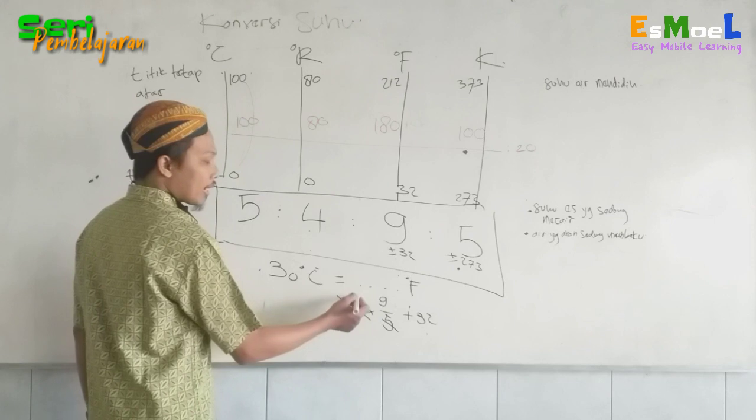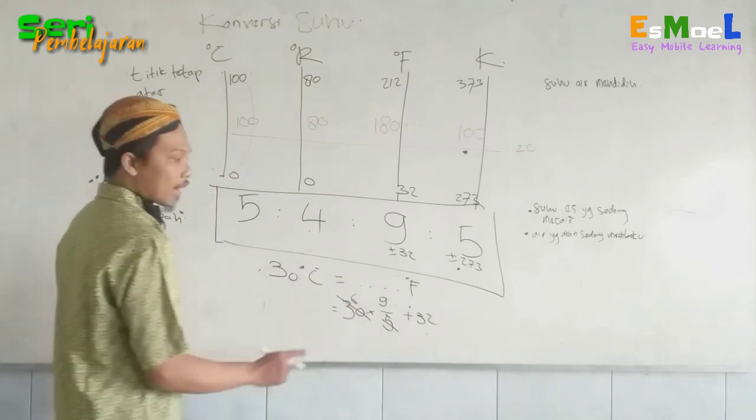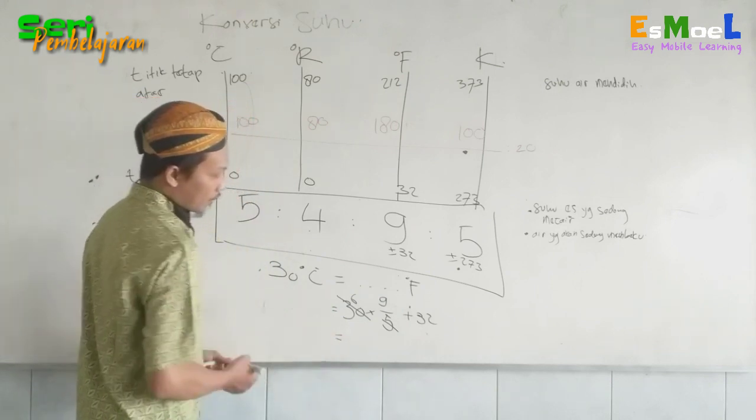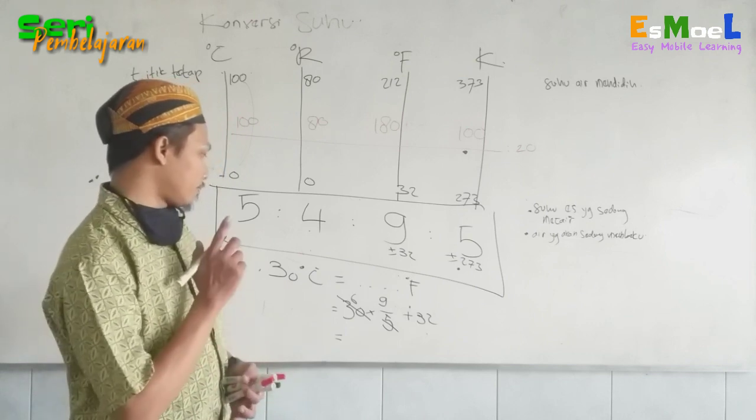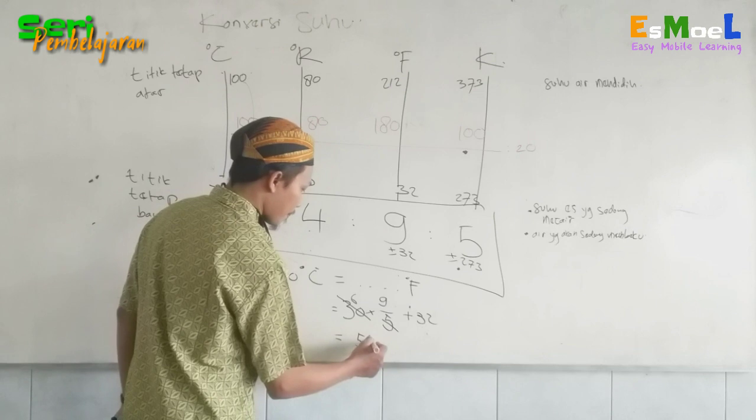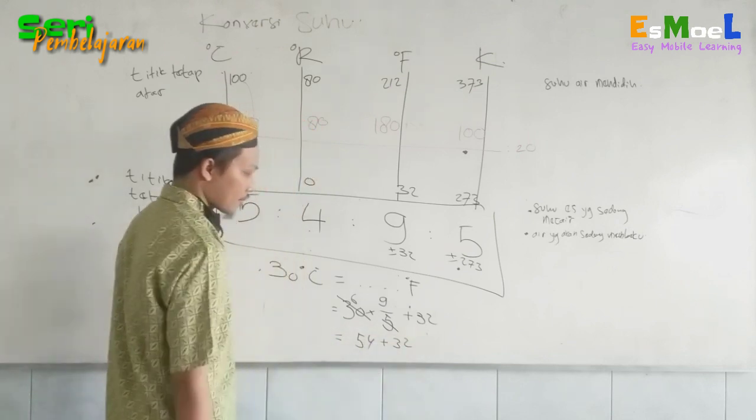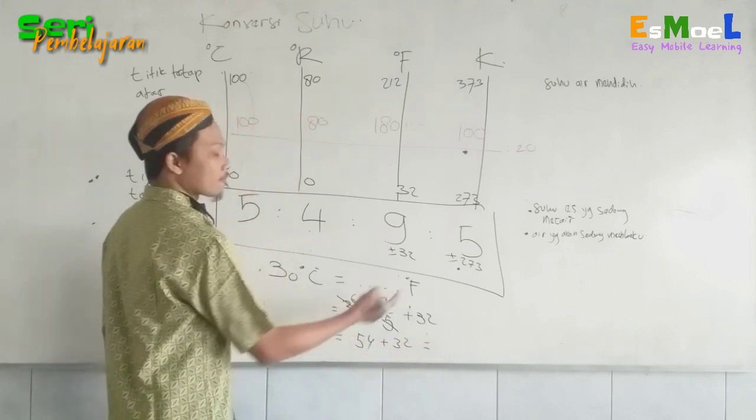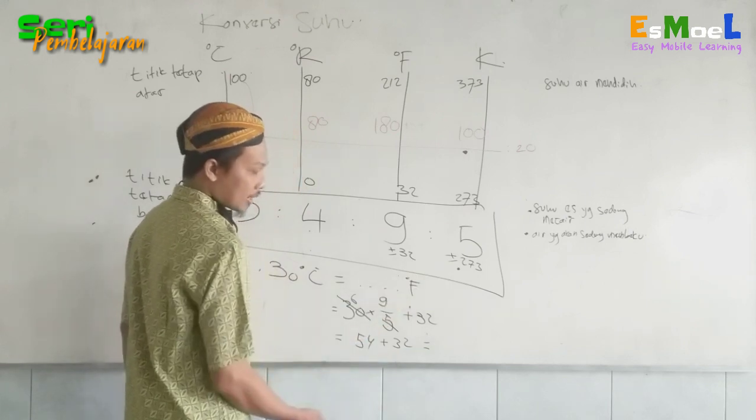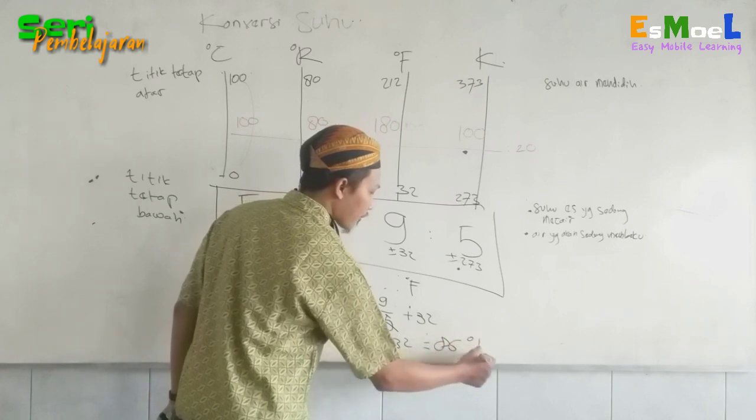Itu hasil akhirnya setelah perkalian ditambah 32. Yang kebalik ditambah dulu. Ini tinggal dicoret. Ketemu berapa? 6 kali 9 adalah 54. Ditambah 32. Ketemu hasilnya terakhir 86 derajat Fahrenheit. Ini nanti tambahnya terakhir.